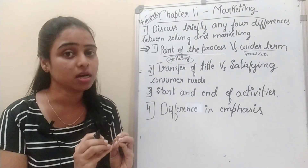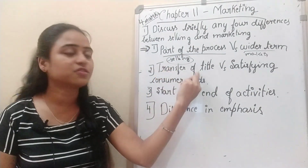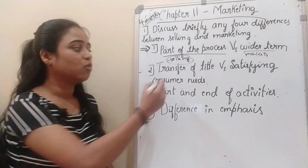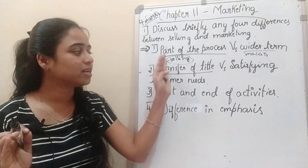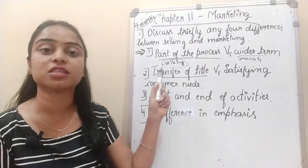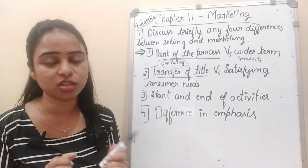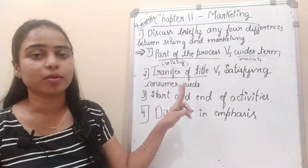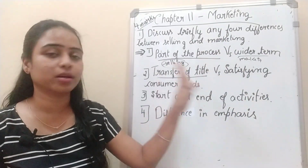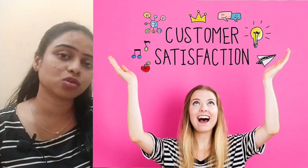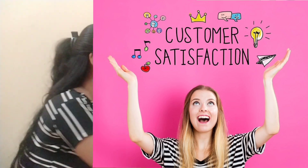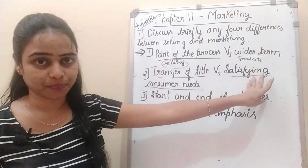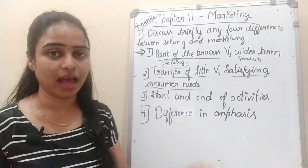The second difference is transfer of title versus satisfying consumer needs. Selling deals with the mere transfer of title or ownership. Marketing, however, does not just deal with transfer of title — it also deals with satisfying the consumer needs. Satisfying customer needs is the main objective of marketing.